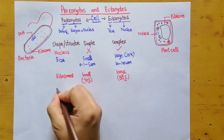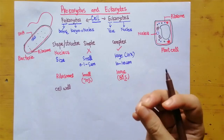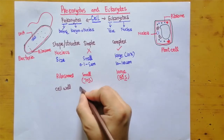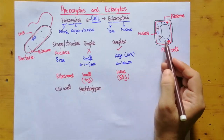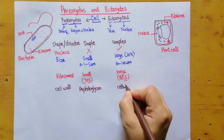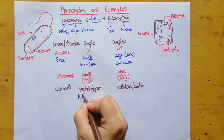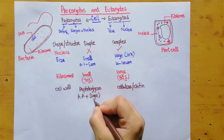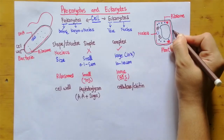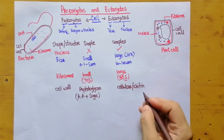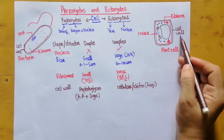The next difference is the cell wall. Both have cell walls, but the composition differs. In prokaryotes, the cell wall is made up of peptidoglycan, which is a polymer made of amino acids and sugars. In plants, the cell wall is made of cellulose — note that chitin is found in fungi, not in plants.